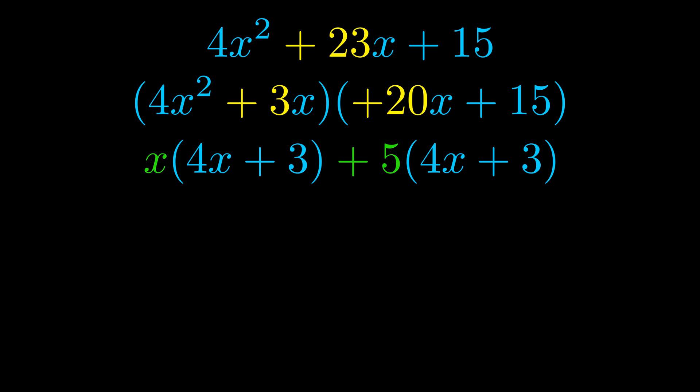Notice also how what remains inside of the parentheses is the same in both cases. The blue values are the same. Those blue values will become one of our factors and we will combine the two green values, the GCFs that we pulled out, to get the other one. And that is our fully factored equation.